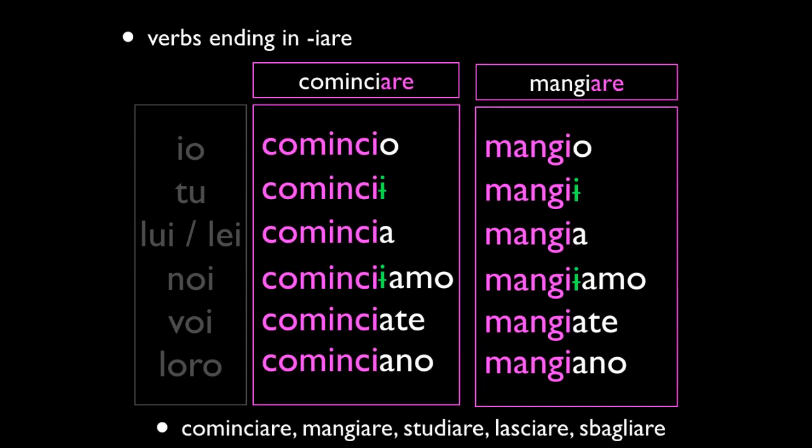On to the next verbs — these are verbs that end in IARE, like COMINCIARE and MANGIARE. You'll notice that these spelling problems occur with verbs that have CI or GI. This is due to unique pronunciation rules in Italian. The problem with IARE verbs is that they have that I-stem, and in the TU and NOI forms you already have an I in the verbal endings you add. So if you conjugate regularly after chopping off the ARE stem, you start: COMINCIO, then TU COMINCI — and you've got two I's next to each other, which is a problem.